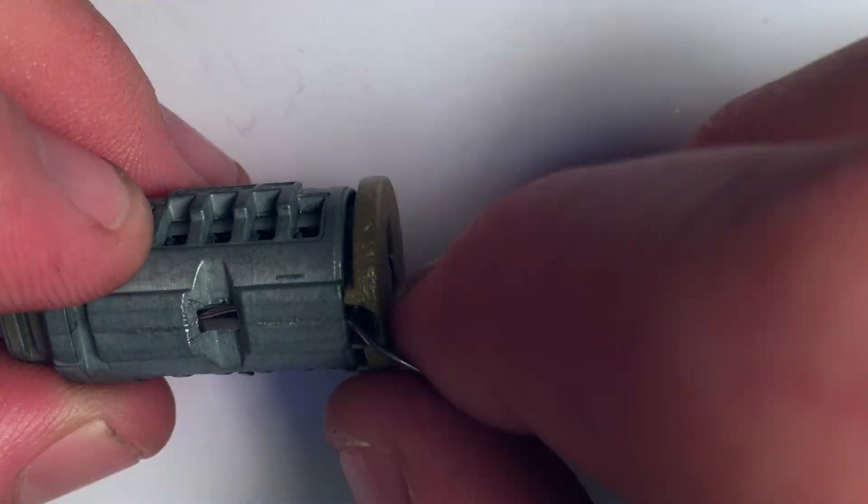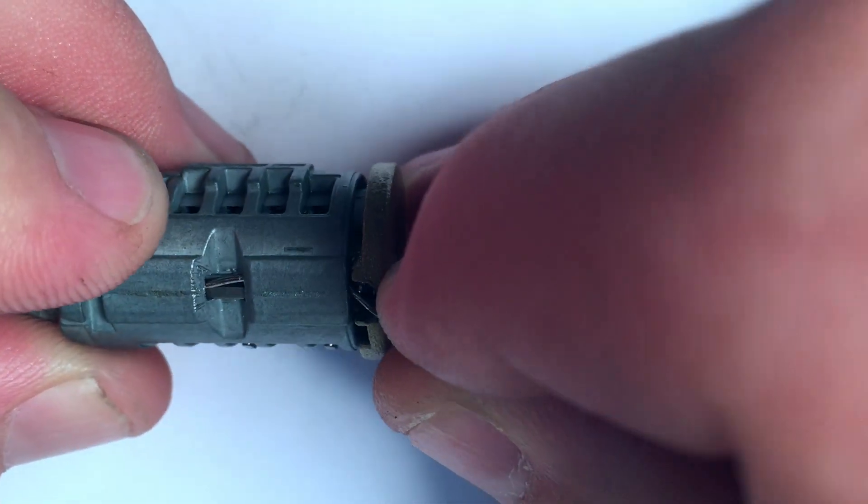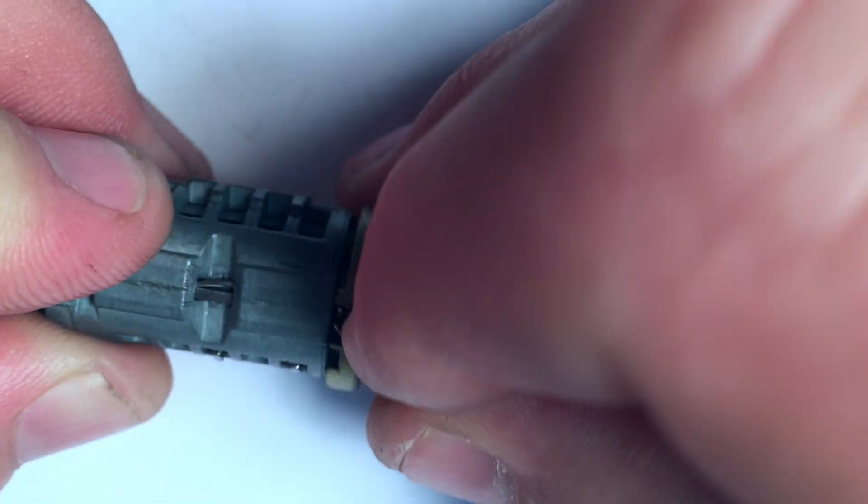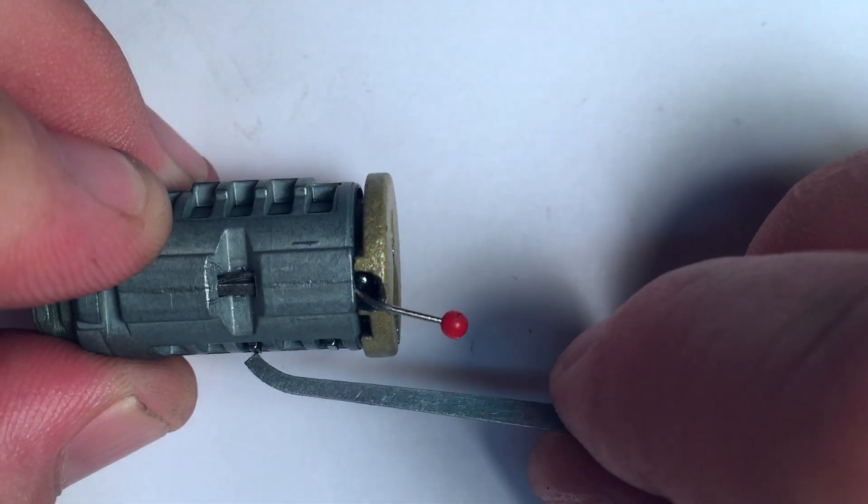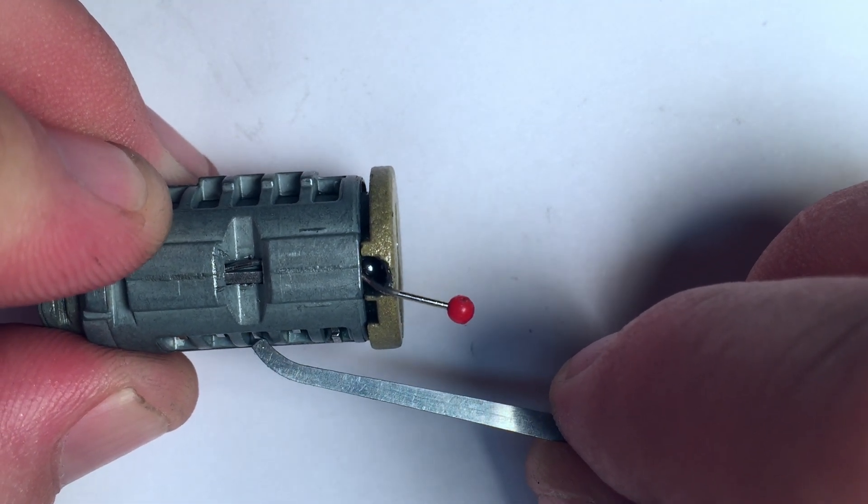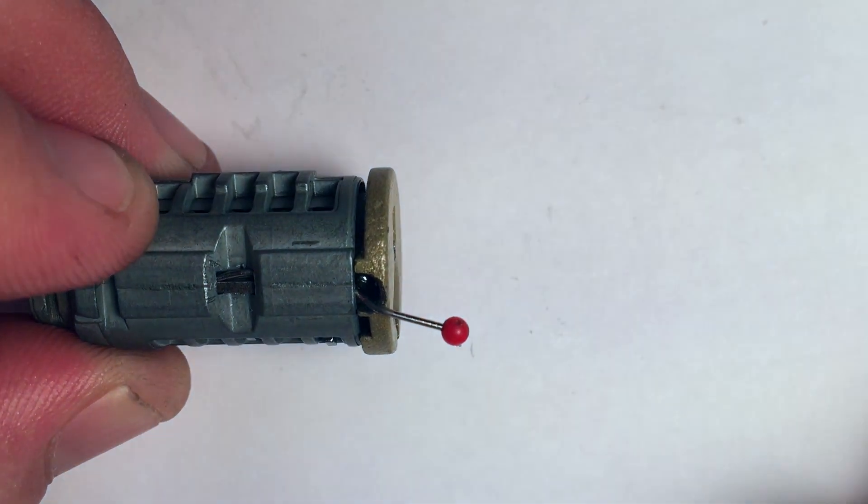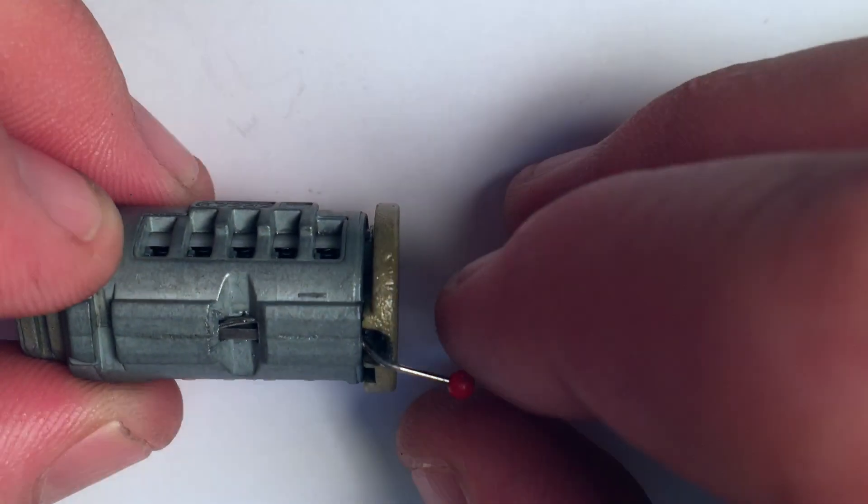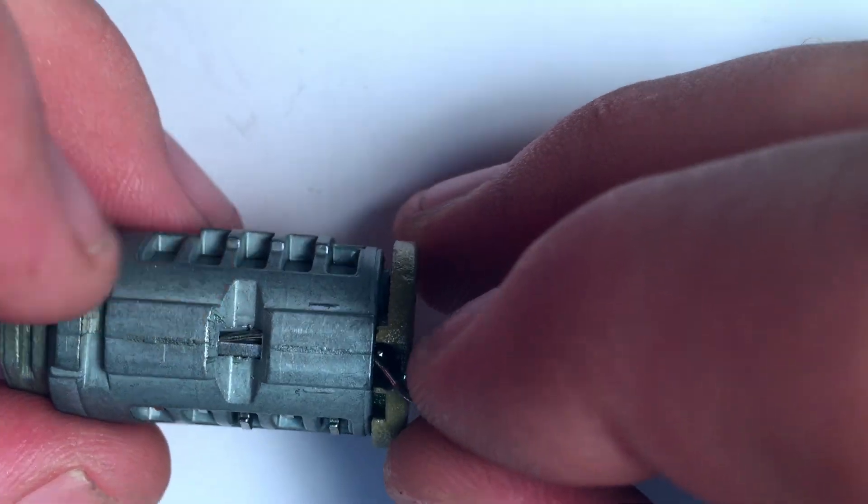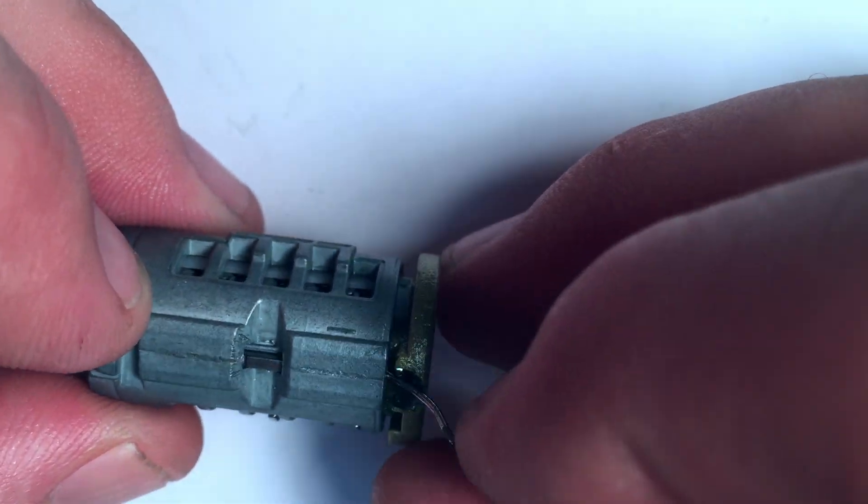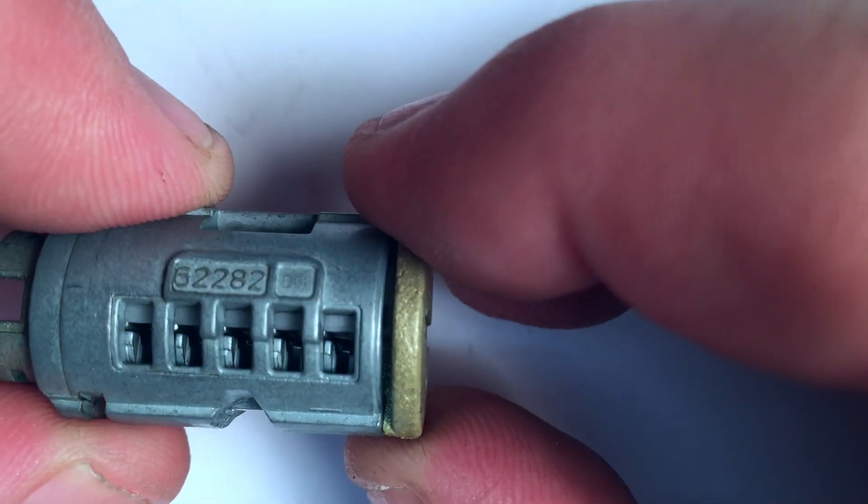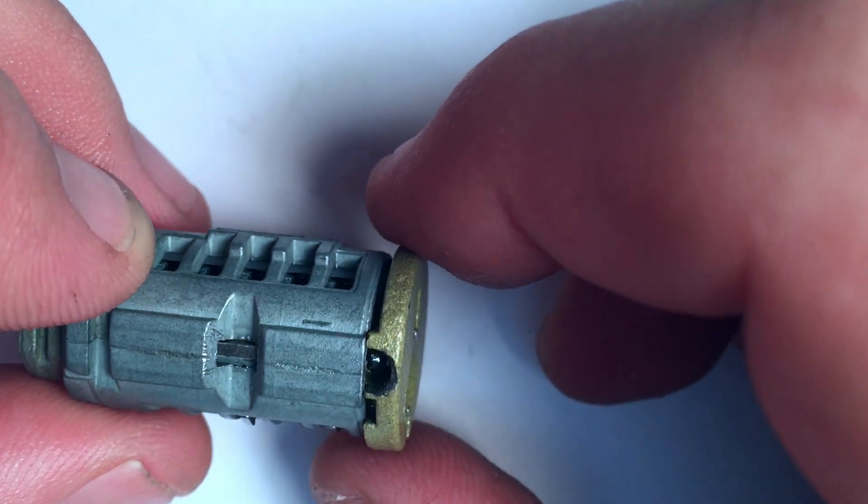But if you get this thing in there just right, you can finagle it in such a way that it will actually bind these pins and cause them to stay. See how that one stayed? It didn't pop back down on me. You can actually get enough pressure on them to where they'll bind on you. The other reason it becomes important is with that inward pressure, it will cause the sidebar to retract under some moderate amount of rotational force. I have not gotten the lock picked yet using this strategy, but I have gotten the pins to bind.